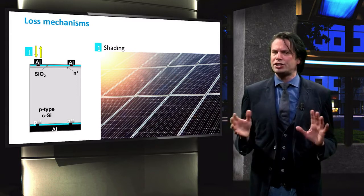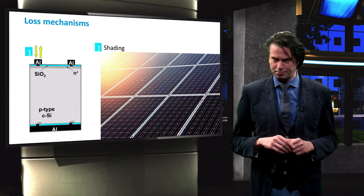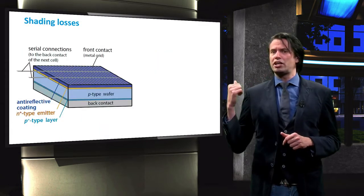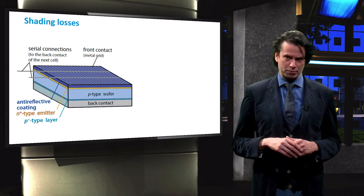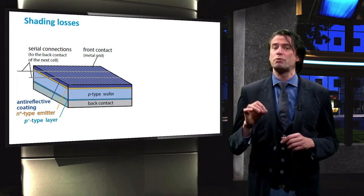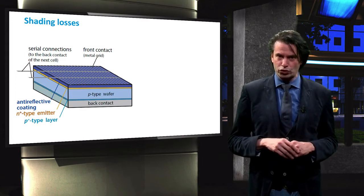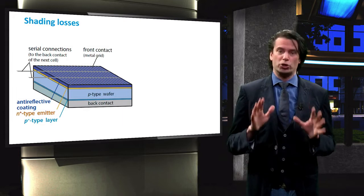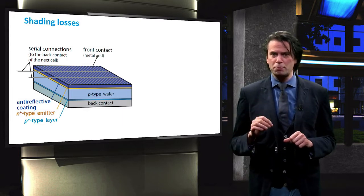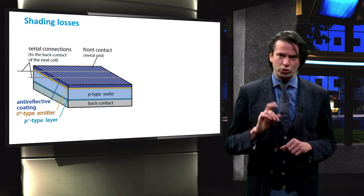To minimize the shading effect, the metal grid requires some clever designing. The solar cell has a classic metal grid pattern on top with two conduction paths for electrons in the middle of the front surface, called busbars. The small stripes going from the busbar to the edges are called fingers.